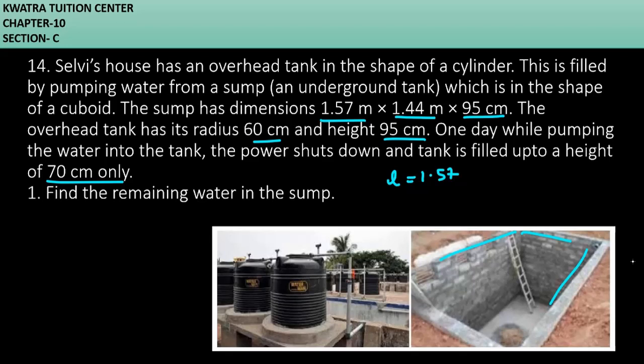What we want to place is the overhead tank. So here we have length is 1.57, the width is 1.44 meter, the height is 95 centimeter. We will convert it to meters. It will be 0.95 meter.